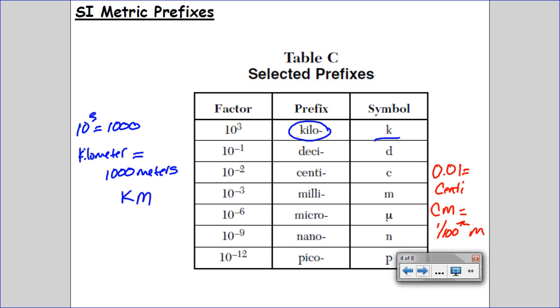Centimeter, cm, equals one one-hundredth of a meter. One hundredth of a meter. And then milli: ten to the negative three. Milli equals 0.001, and a milliliter equals 0.001 liters or one one-thousandth of a liter.